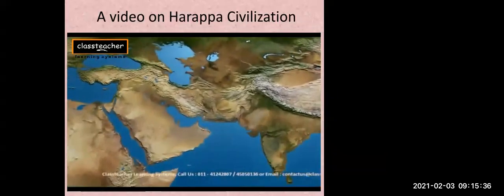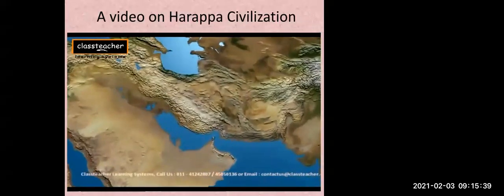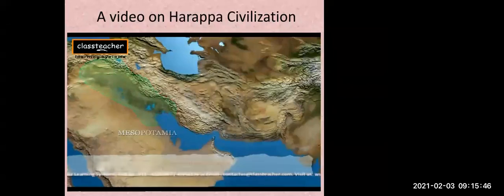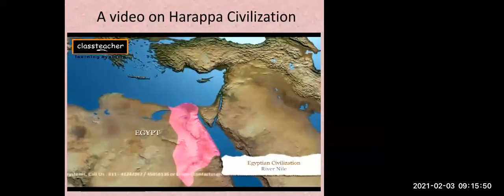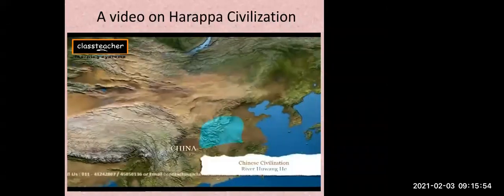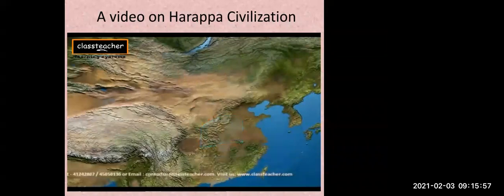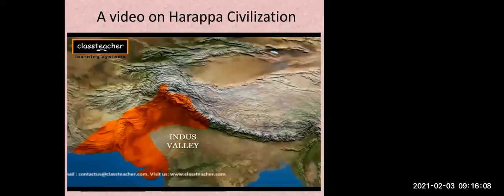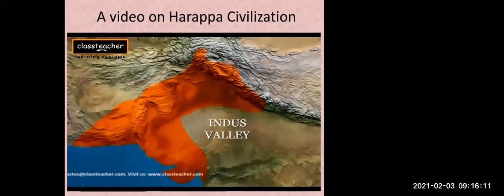Human history is replete with accounts of the rise and fall of civilizations and empires. Human settlements first began on the banks of fertile river plains in four different parts of the world. The Mesopotamian civilization flourished on the Tigris and Euphrates; the Egyptian on the Nile; the Chinese on the Huangho; and the Harappan civilization flourished on the banks of the Indus and its tributaries. Of these ancient civilizations, the Harappan holds extreme merit due to its outstanding town planning.